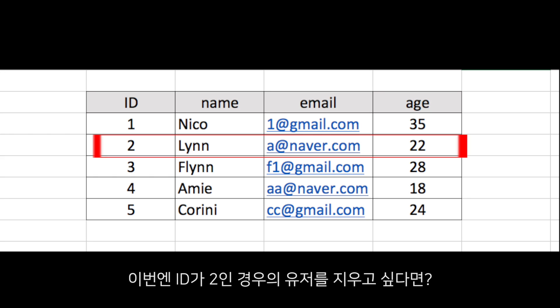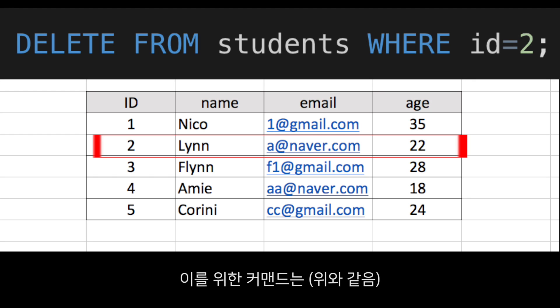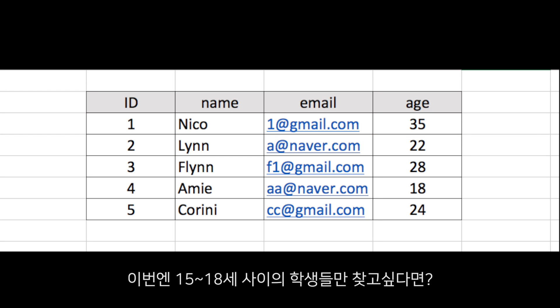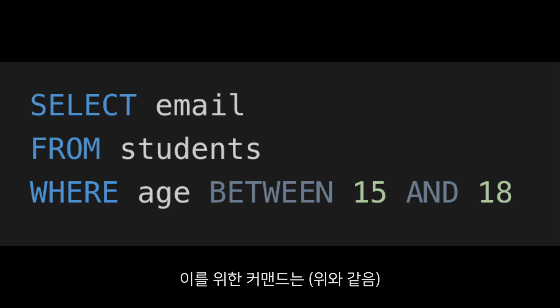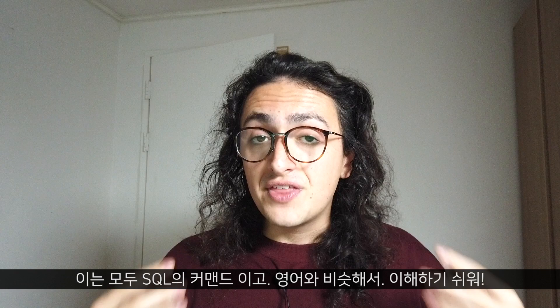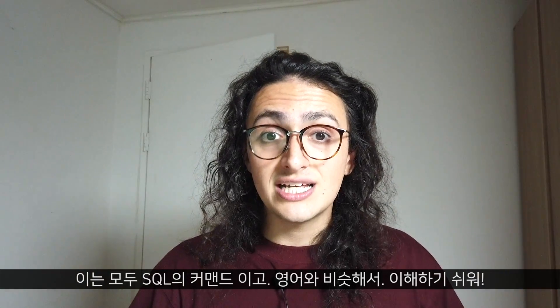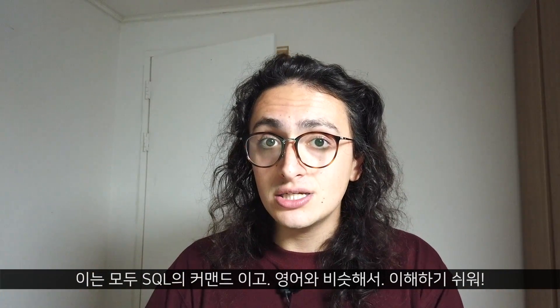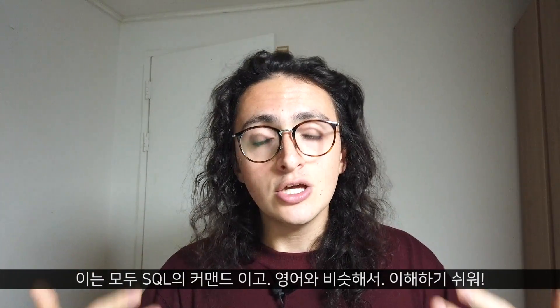What if we want to delete the student with ID number 2? All we do is: DELETE FROM students WHERE id = 2. What if we want students between 15 and 18 years old? We write: SELECT email FROM students WHERE age BETWEEN 15 AND 18. As you can see, we're using SELECT, FROM, WHERE, BETWEEN, and AND — all commands provided by SQL — and it reads so much like English.